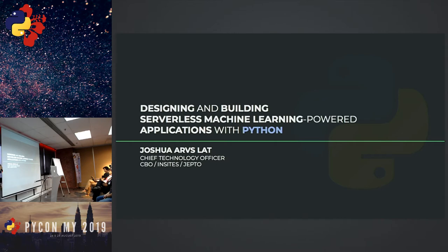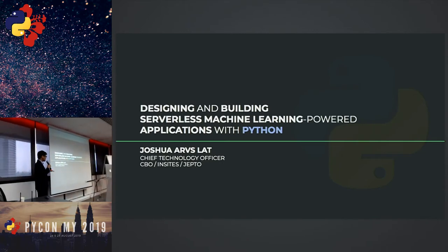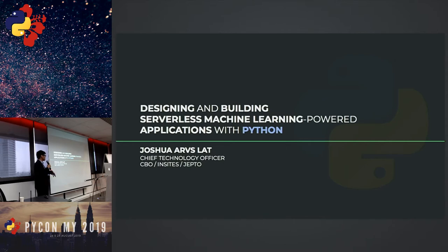I am Joshua Arvin Lett, Chief Technology Officer of Complete Business Online, Insight, and Jepto. They are Australian-owned companies and we're building a lot of things. Complete Business Online has a lot of projects. With Jepto, it's a machine learning-powered startup where we're doing anomaly detection, forecasting, and other things that help us process data and make the lives of our customers better.